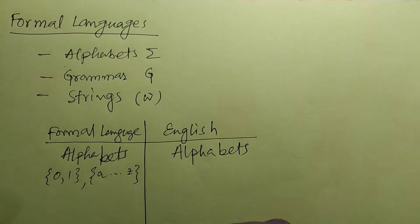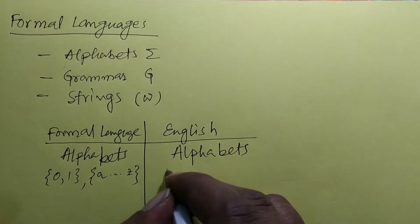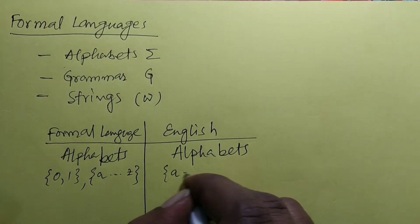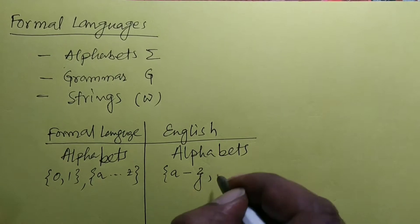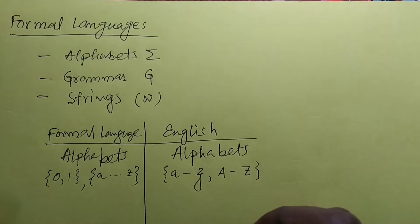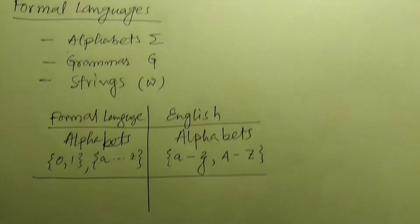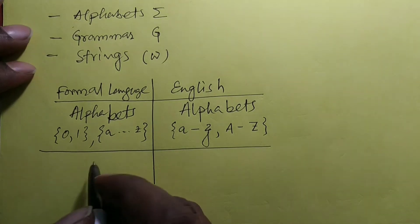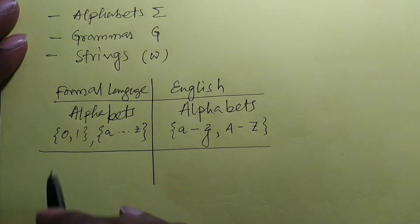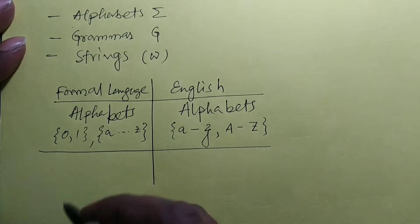It may be all characters available on your laptop or desktop keyboard. In English, the alphabets are small a to small z and capital A to capital Z. Now in both cases, when we write a sequence of characters together, we call them as string.